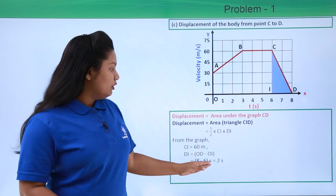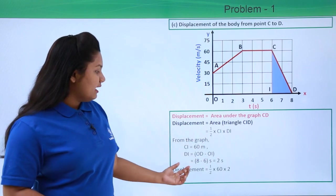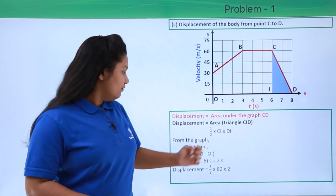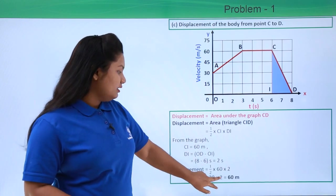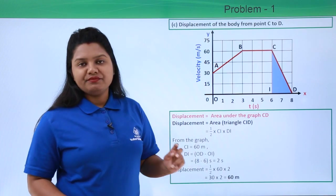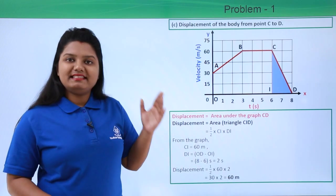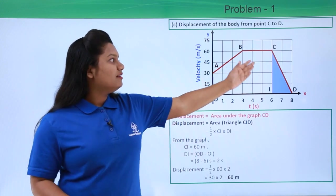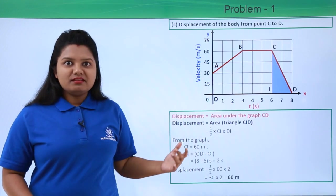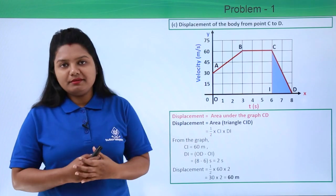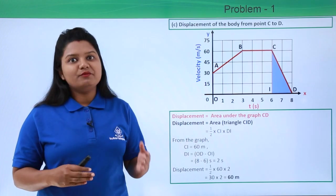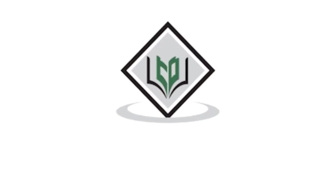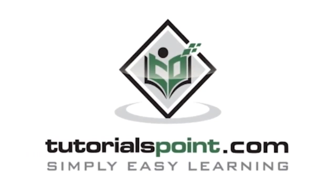Substituting into the formula gives half times 60 times 2, which equals 60 meters. So the body has covered 60 meters from point C to point D. This was the end of the solution. I hope this problem was understandable. Thanks for watching TutorialsPoint.com — Simply Easy Learning.